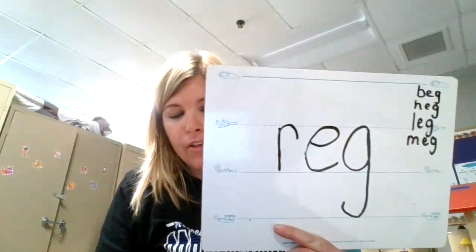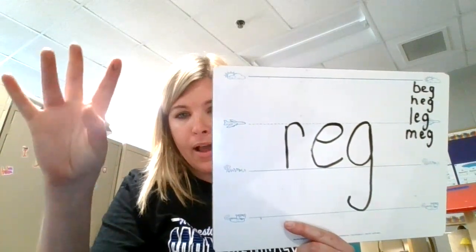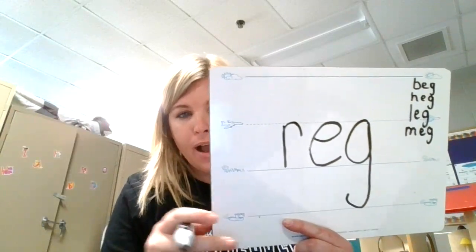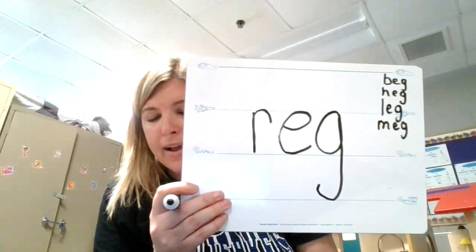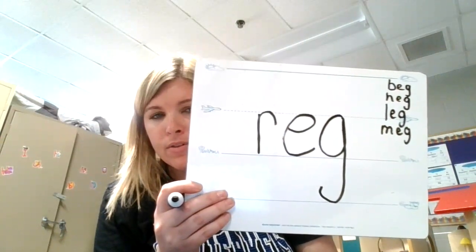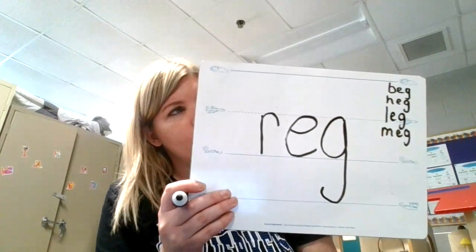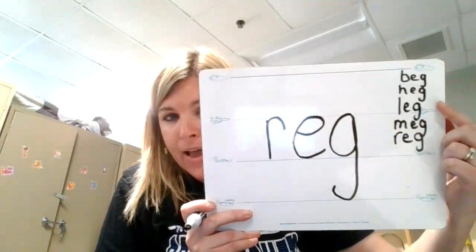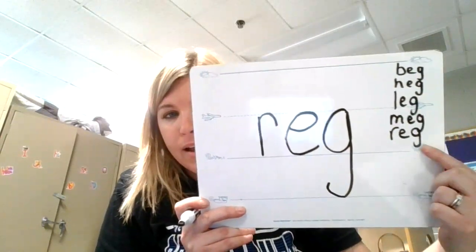The next letter we're going to put in front is R. Let's tap it — er-egg, er-egg. Reg. Can you use the word reg in a sentence? We can't use that in a sentence — reg is not a real word, it's a nonsense word. Does it still fit in our egg word family? Yeah, it still rhymes with beg, heg, leg, meg, and reg. They all rhyme. They're all part of the egg family.